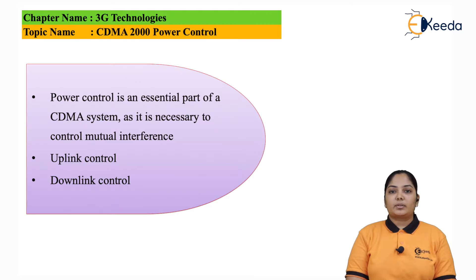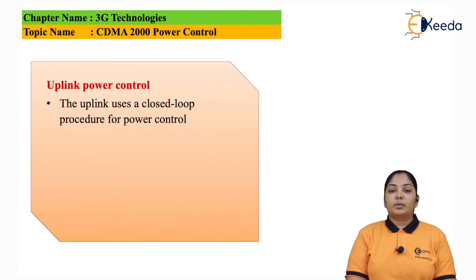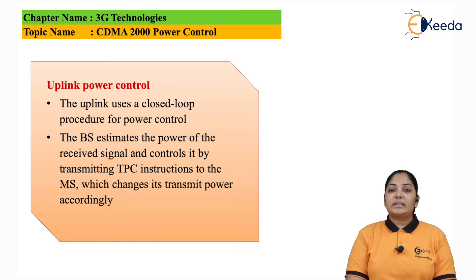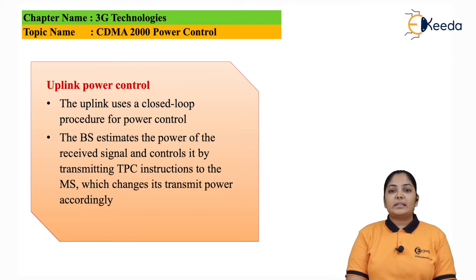Let us see first the uplink power control system. Uplink uses a closed loop power control system. Closed loop means the signal is transmitted from the mobile station to the base station, and the base station does the necessary changes to control the power level of the mobile phone. The base station estimates the power of the received signal and controls it by transmitting the TPC, which stands for Transmit Power Control Bits. The TPC is the instruction bits sent to the mobile station which changes its power accordingly. The TPC bits are transmitted with the DPCCH, that is the Dedicated Physical Control Channel. It contains the instruction to either increase or decrease the power, and the possible step size is 1 or 2 dB.